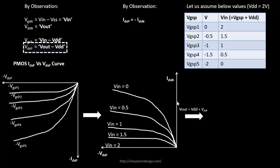Let's take an example: if VDSP is negative 2 volts and we add positive 2 volts (VDD) to it, we get Vout = 0. So when VDSP is −2V, Vout is 0. At that point, with Vin = 1.5V, you see a finite value of current — for example, with VDSP = −2V and VDD = +2V, Vout = 0.